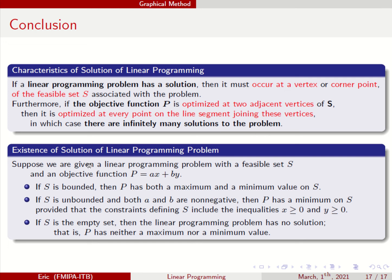On the existence of solutions for a linear programming problem: suppose we have a feasible set S and objective function P equals ax plus by. If S is bounded, then P has both a maximum and minimum value on S. If S is unbounded, then P has a minimum on S provided the constraints include x greater than 0 and y greater than 0. If S is the empty set, then the linear programming problem has no solution.